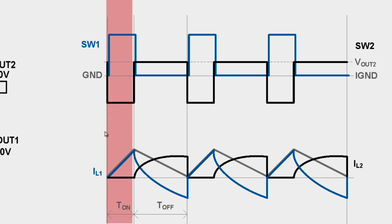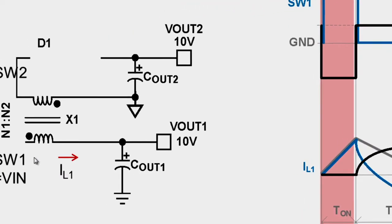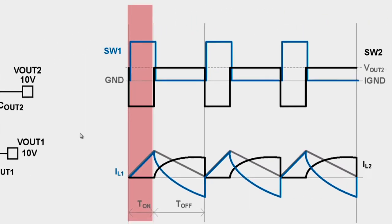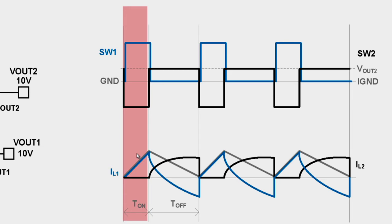The on time is highlighted in this slide. During on time, the switch node 1 is connected to the input voltage Vin. During this time, the inductor current charges the output capacitor of the primary output, and because of the polarities of the diode, the secondary diode is reverse biased. During on time, the operation of the primary side is identical to a buck converter, and the secondary current is zero.